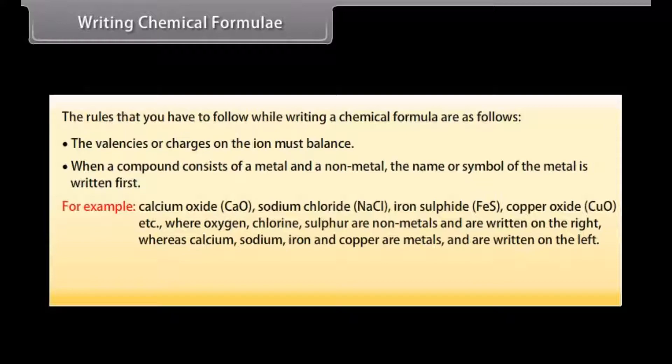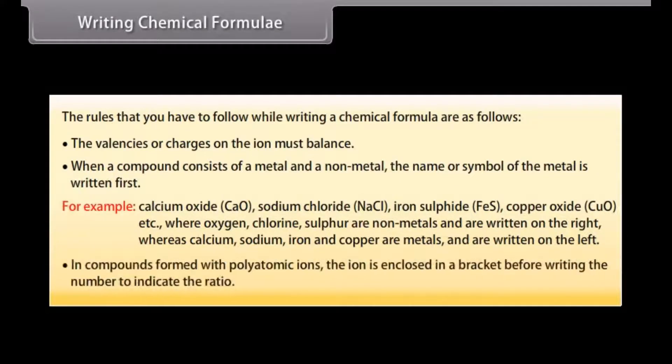For example: calcium oxide (CaO), sodium chloride (NaCl), iron sulfide (FeS), copper oxide (CuO), etc. Where oxygen, chlorine, sulfur are non-metals and are written on the right, whereas calcium, sodium, iron and copper are metals and are written on the left. In compounds formed with polyatomic ions, the ion is enclosed in a bracket before writing the number to indicate the ratio.